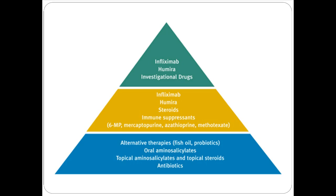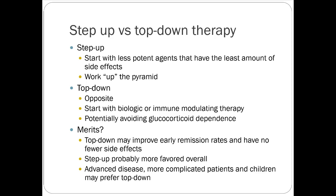Historically we started with 5-ASA drugs, some antibiotics, and alternative therapies. However, this has been flipped on its head recently — since Crohn's is severe with lots of complications, the idea is to go straight to a bigger gun right off the bat to get somebody into remission right away. A step-up approach starts with more limited therapies; a top-down approach starts with a biologic or immune-modulating therapy right off the bat.